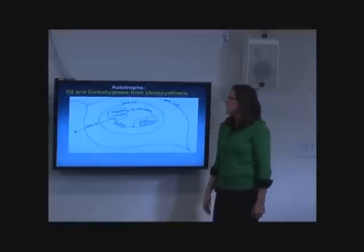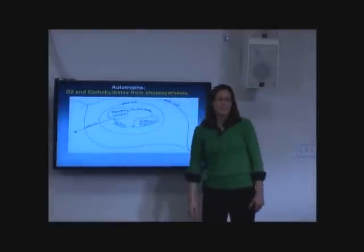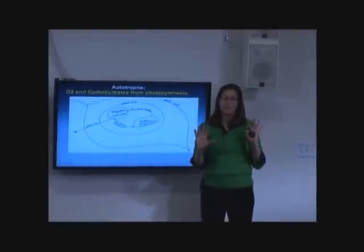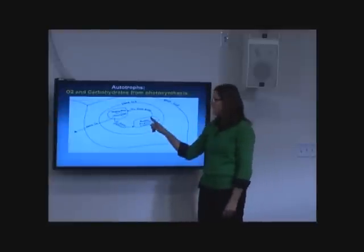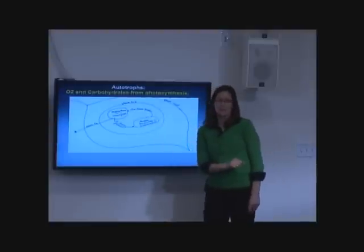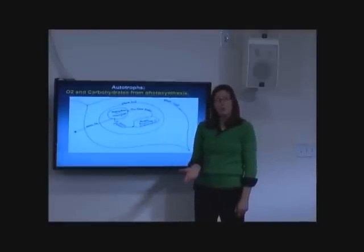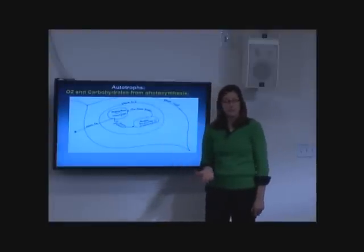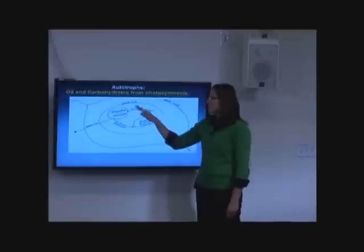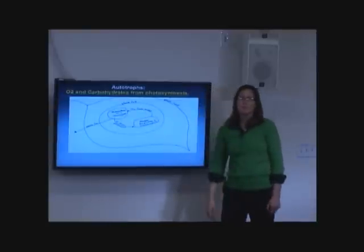Notice also that one of the inputs for photosynthesis, plants don't always have to use CO2 from the atmosphere. They can use CO2 from the Krebs cycle. They could use water from oxidative phosphorylation. So there are some products here that could be used in photosynthesis as well.